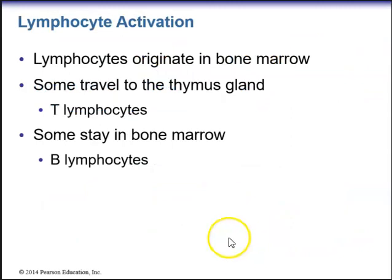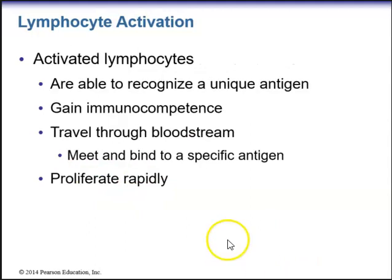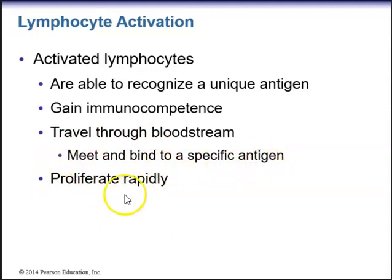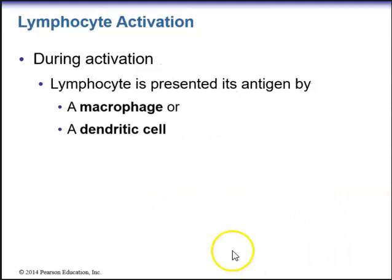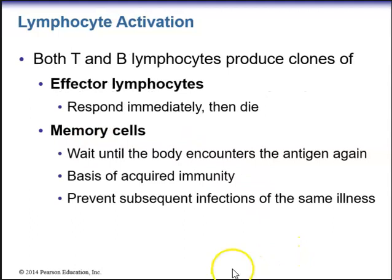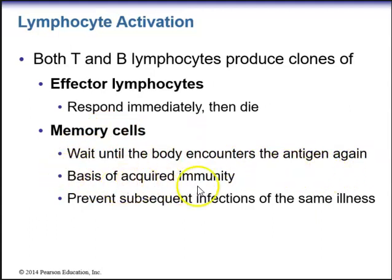Lymphocytes originate in bone marrow. Some will travel and mature in the thymus gland, becoming T-lymphocytes. Some will stay and mature in the bone marrow, becoming B-lymphocytes. Activated lymphocytes are able to recognize a unique antigen, allowing the body to gain immunocompetence. Activated lymphocytes travel through the bloodstream, meet and bind to a specific antigen, and then proliferate rapidly. During activation, the lymphocyte is presented its antigen by either a macrophage or a dendritic cell. Both T and B lymphocytes produce clones of effector lymphocytes that respond immediately then die, as well as clones of memory cells. Memory cells wait until the body encounters the antigen again — this is the basis of acquired immunity and prevents subsequent infections of the same illness.